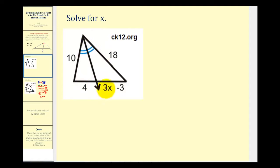So the ratio of 4 to 3X minus 3 must equal the ratio of 10 to 18. Now to solve for X, again, we'll cross multiply.